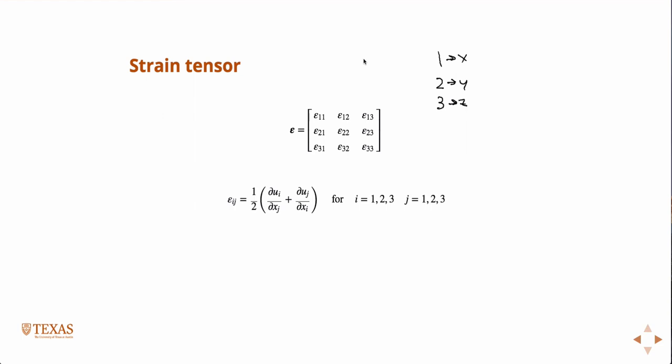And so if we write it, we can write it using the one, two, three labeling, we can write it very compactly like this. So any component epsilon IJ is equal to one-half partial UI partial XJ, partial UJ partial XI, for I goes from one to three and J goes to one to three.